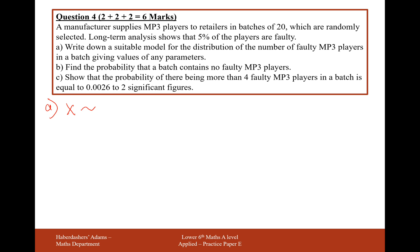So X is going to be distributed. It's going to be a binomial distribution based on the fact that we're looking at two outcomes here: either they are faulty or not faulty. Each batch has 20 MP3 players in them and the probability of them being faulty is 0.05.